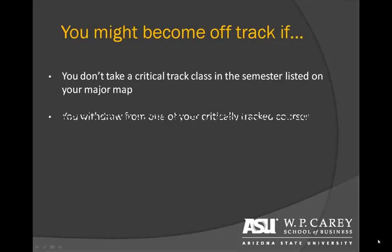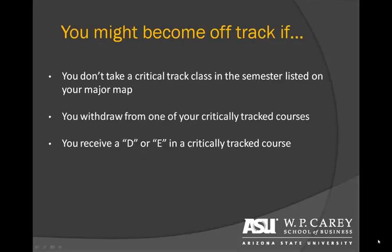There are several reasons why you could become off track, but a few of the most common reasons are: if you don't take a critically tracked class in the semester listed on your major map, it will indicate that you're off track. Additionally, withdrawing from one of your critically tracked courses or receiving a grade of D or E in a critically tracked course will also cause you to be off track.